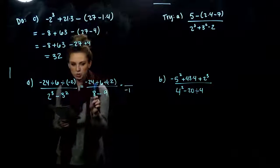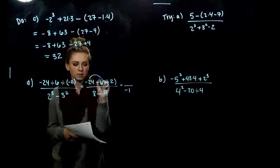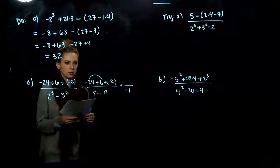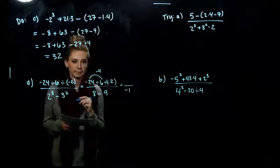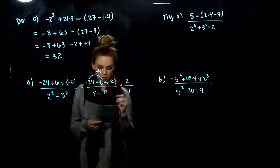And what about up in the numerator? What are we going to have? So negative 24 divided by 6 is going to give you what? Minus 4. Negative 4 divided by negative 2 will give us a positive 2.